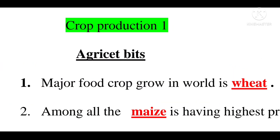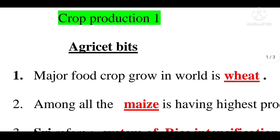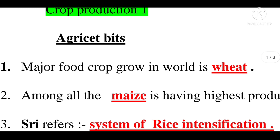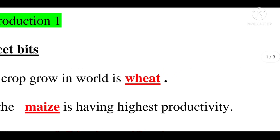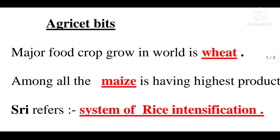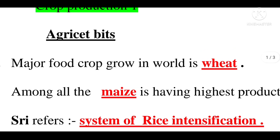The major food crop growing in the world is wheat. Among all crops, the one having the highest productivity is maize.